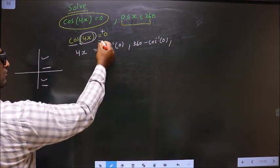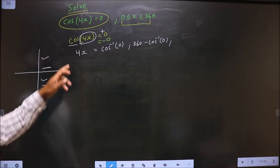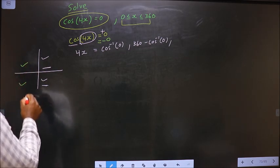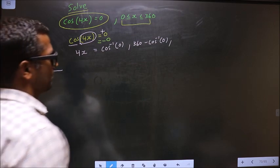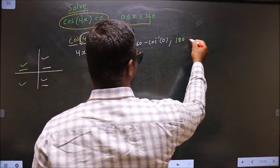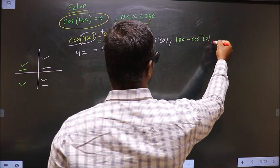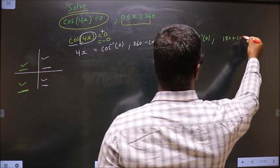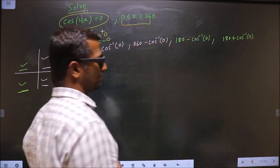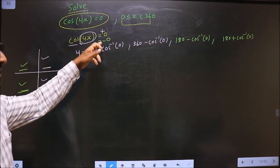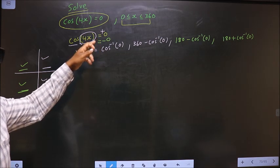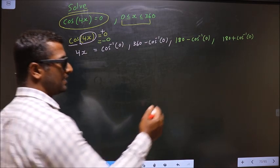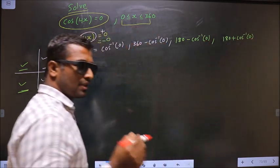Now, what if instead of positive 0 we consider negative 0? We check where cos is negative — it is negative in the second and third quadrants. To get an angle in the second quadrant we do 180 minus cos inverse 0, and for the third quadrant we do 180 plus cos inverse 0. Remember: the negative sign is only used for selecting quadrants; once quadrants are selected, do not place the negative sign again.